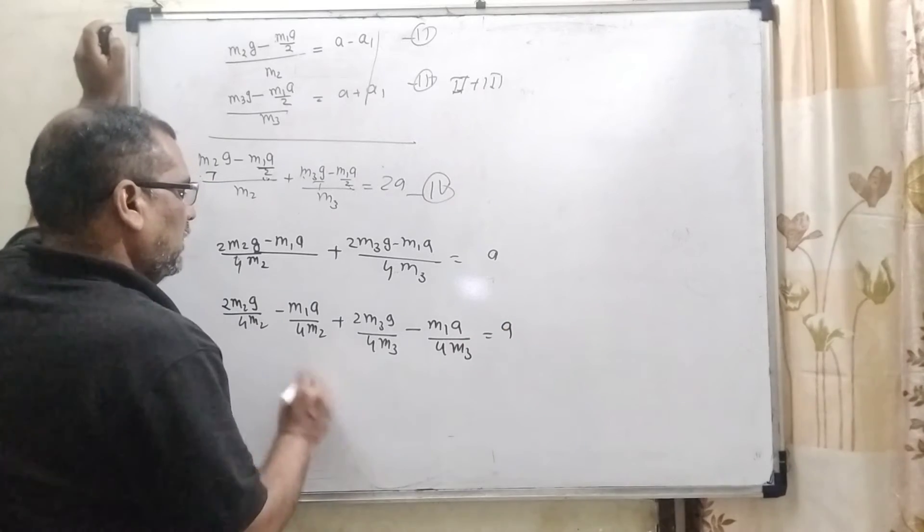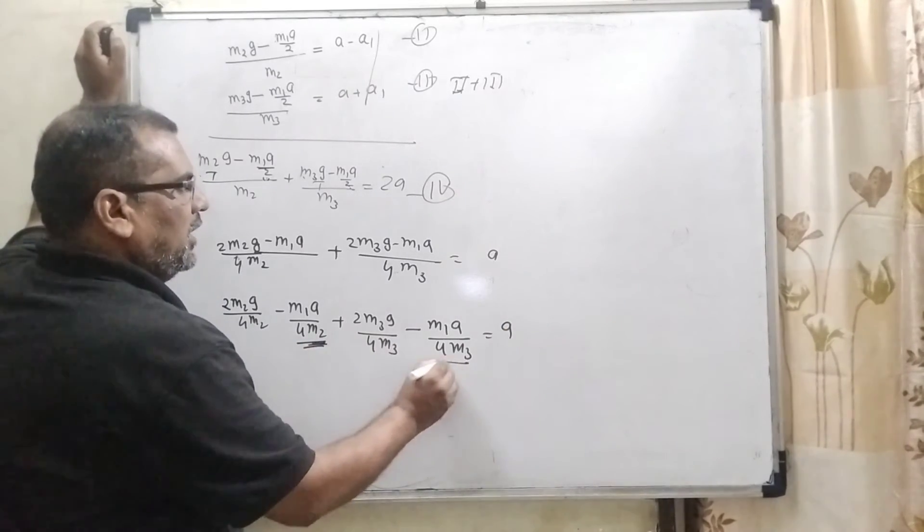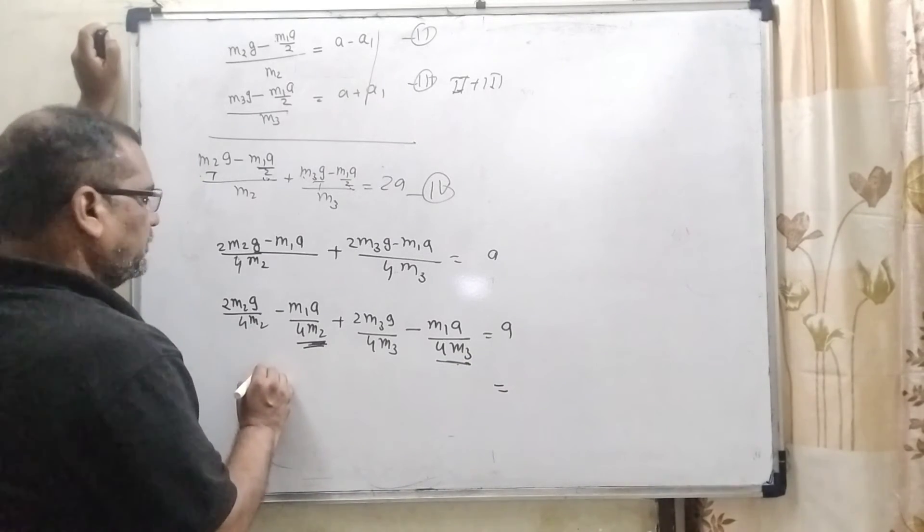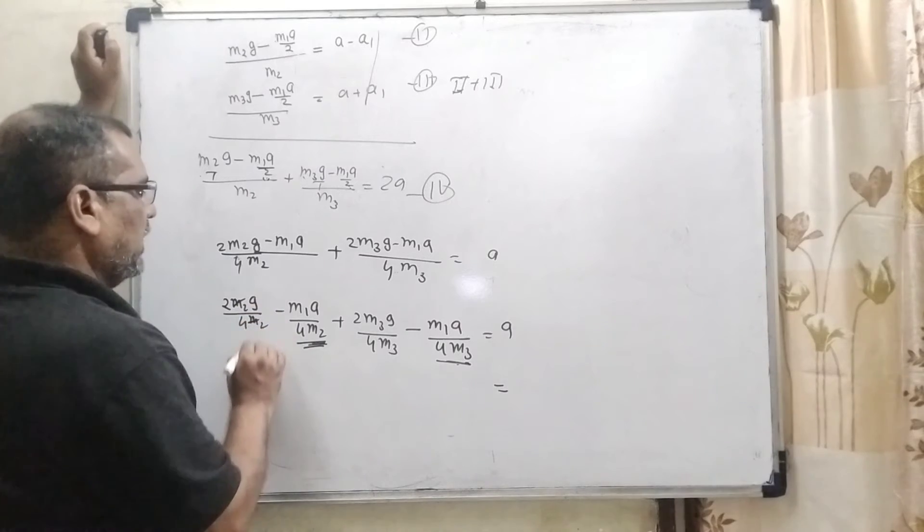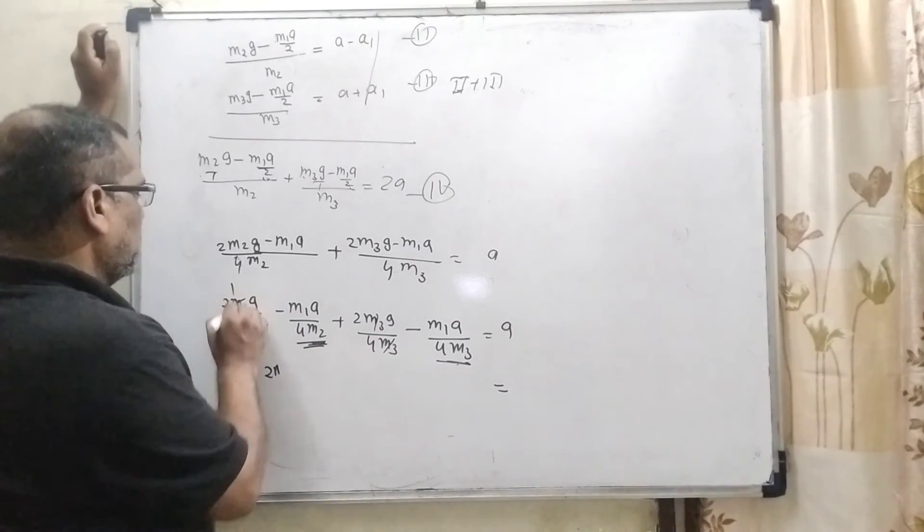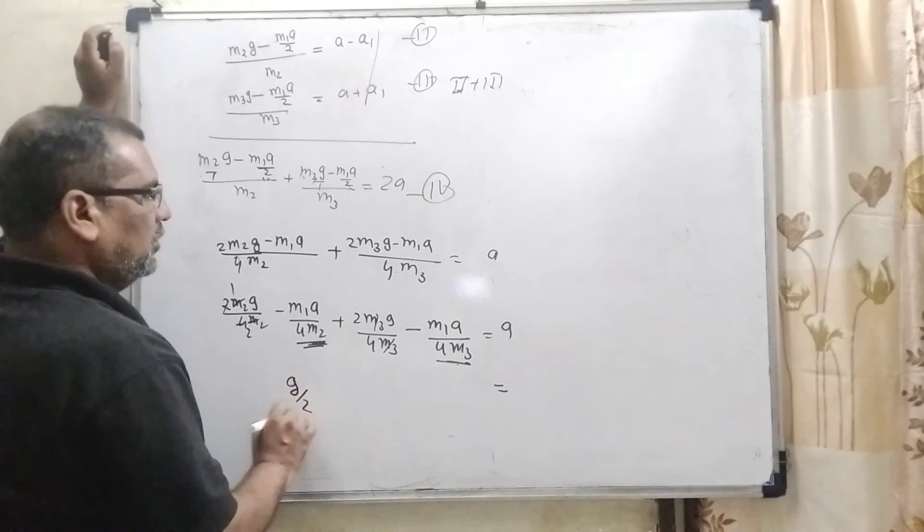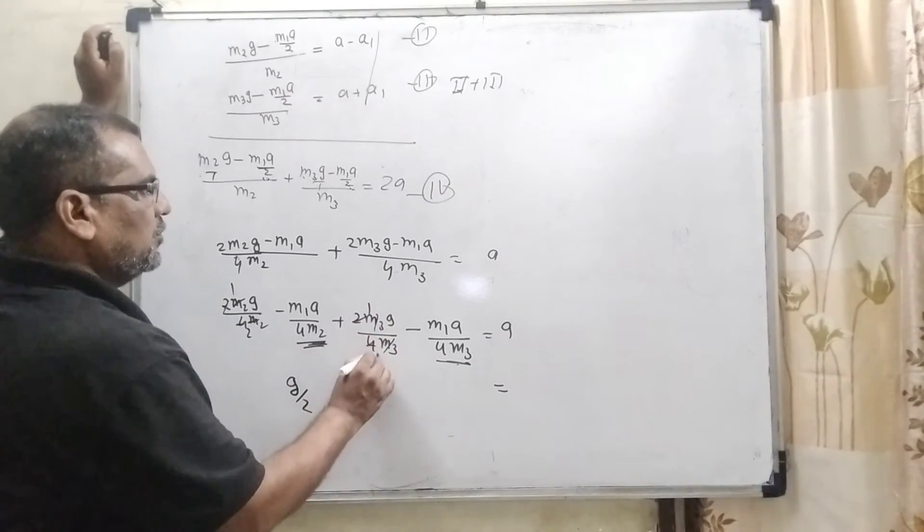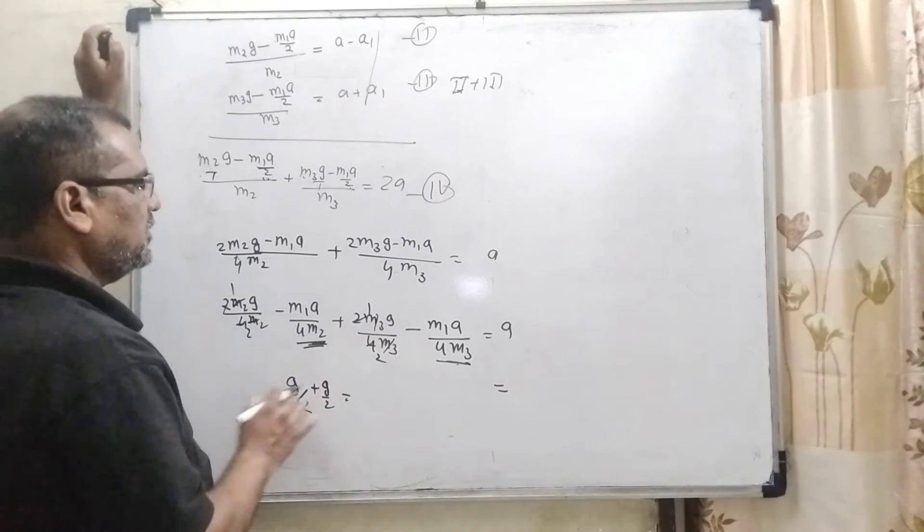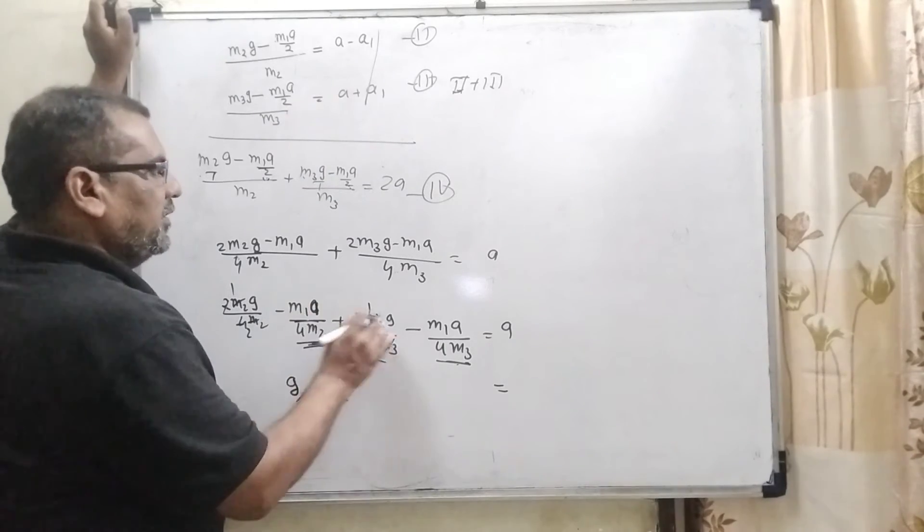Now, all the terms which is A, including that is A transposing to the right side. So here, M2 cancel and M3 cancel, two to the 4. So it become G by 2 similarly G by 2.